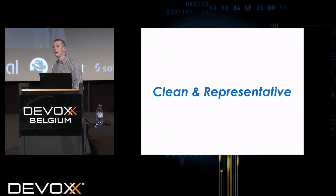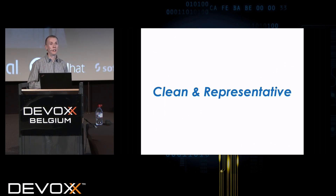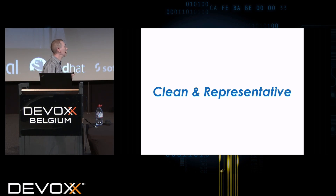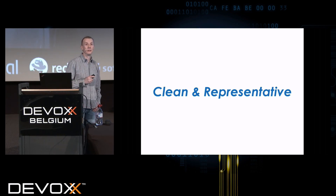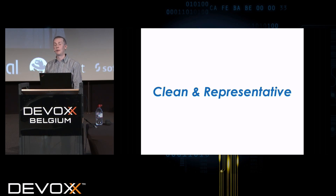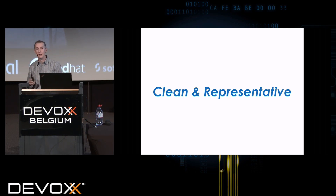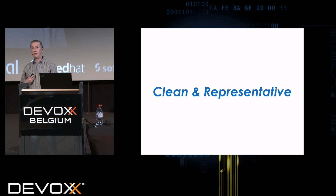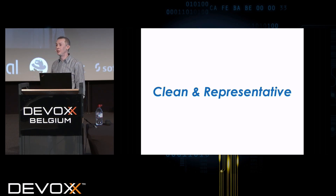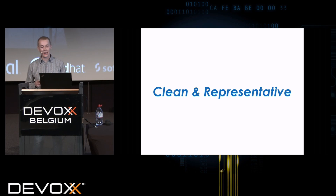Let's go forward and look at what we can do — how we should be thinking about things, even at a very simple level. Let's look at what 'clean and representative' means. I love getting the dictionary out, because our industry is riddled with things named really badly — like 'random access memory.' Do you want memory to give you random values back? No, you want arbitrary access. And 'non-functional requirements' — the list is endless. So let's look at what it means to be clean.